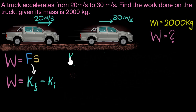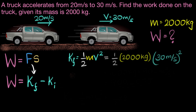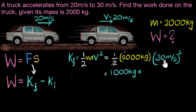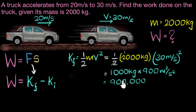Let's do this. The final kinetic energy is ½m times the final velocity squared — let's call that v. Plugging in the values and simplifying: the 2 cancels to give 1000, and 30 squared is 900. So we get 1000 kilograms times 900 meters squared per second squared, which equals 900,000 joules.